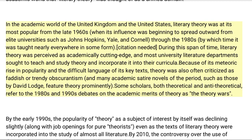In the academic world of the United Kingdom and the United States, literary theory was at its most popular from the late 1960s — when its influence was beginning to spread outward from elite universities such as Johns Hopkins, Yale, and Cornell — through the 1980s, by which time it was taught nearly everywhere in some form. During this span of time, literary theory was perceived as academically cutting-edge. Because of its meteoric rise in popularity and the difficult language of its key texts, theory was also often criticized as faddish or trendy obscurantism. Some scholars refer to the 1980s and 1990s debates on the academic merits of theory as the 'theory wars.'